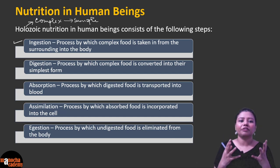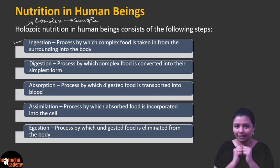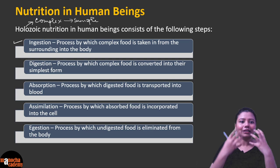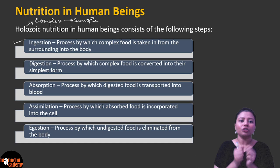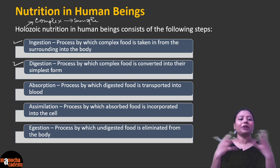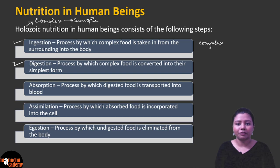During the process of ingestion, we use hands — some people use a fork — but the main organs helping in ingestion are your lips, tongue, and teeth, which take the food in while you are chewing it and swallowing it. Next, when the food goes inside your alimentary canal, you start digesting it. The meaning of digestion is: we take complex food and convert it into its simplest assimilable form.